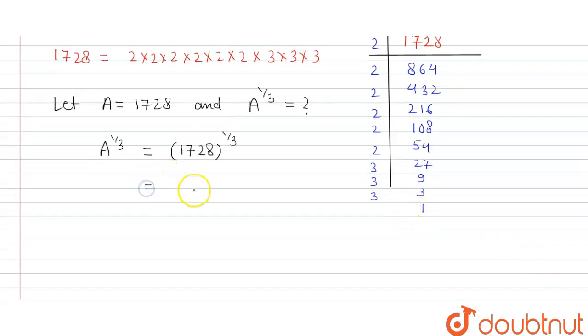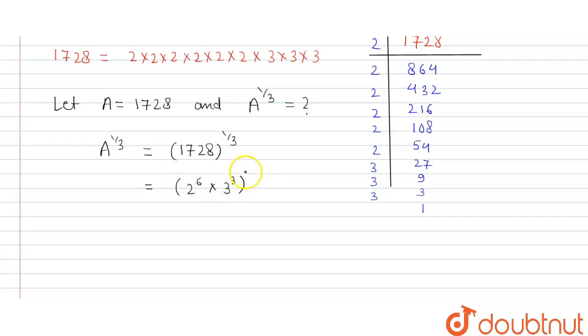This comes out to be 2 raised to power 6, multiplied by 3 raised to power 3, whole raised to the power 1/3.